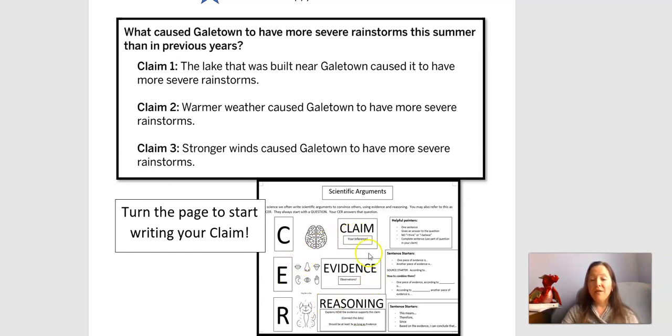And then my evidence is my observation. So this is not my thinking. This is just what I can see or read or touch or smell from a data table, from my observations. And then the reasoning is where I put it all together. So this is thinking again. This is where I figure out how the evidence backs up the claim that I made. And then I use my statements of therefore and since or because, and I connect the dots and put it all together.